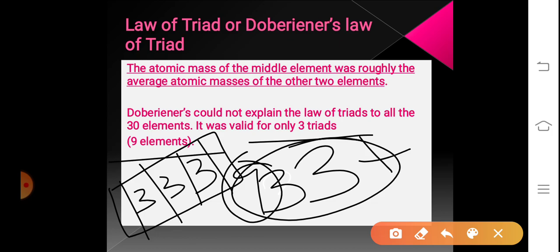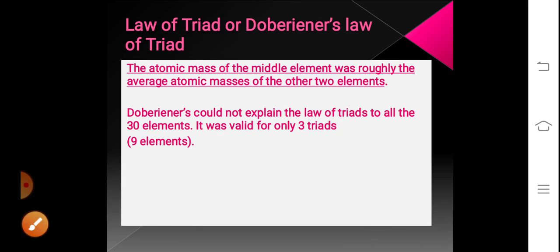Dobereiner could not explain the law of triads for all 33 elements — it was valid only for 3 triads, that is 9 elements. His arrangement was later changed by another scientist through Newland's law of octaves. In the next session, I will be explaining Newland's law of octaves and how Newland arranged the elements. Thank you.